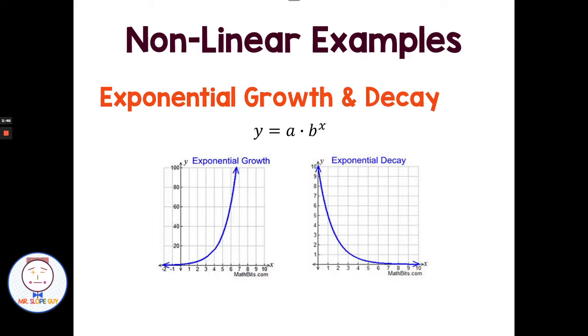Exponential growth, exponential decay. If we have something doubling, tripling, quadrupling, something growing very quickly, that's not linear. It's growing way faster than linear. Or something that's decaying, it's being cut in half, a third, a fifth. It's getting smaller and smaller and smaller and smaller, approaching zero. It has this curve to it. That would be non-linear as well.